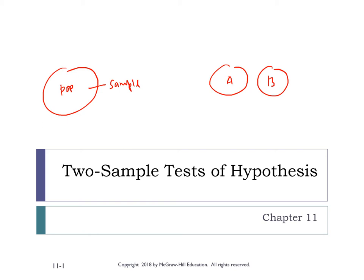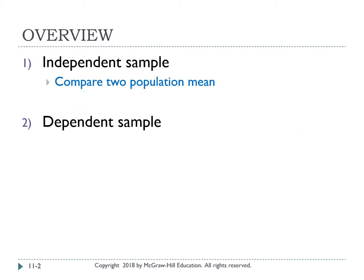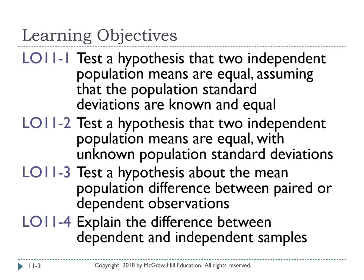We will select sample A randomly and sample B randomly to test our hypothesis. The chapter overview covers two topics: independent sample and dependent sample. For independent sample, the samples are independent of each other. For dependent sample, the samples are related to each other. Under independent sample we compare two population means using z-statistics and t-statistics, while for dependent sample we use t-statistics only.